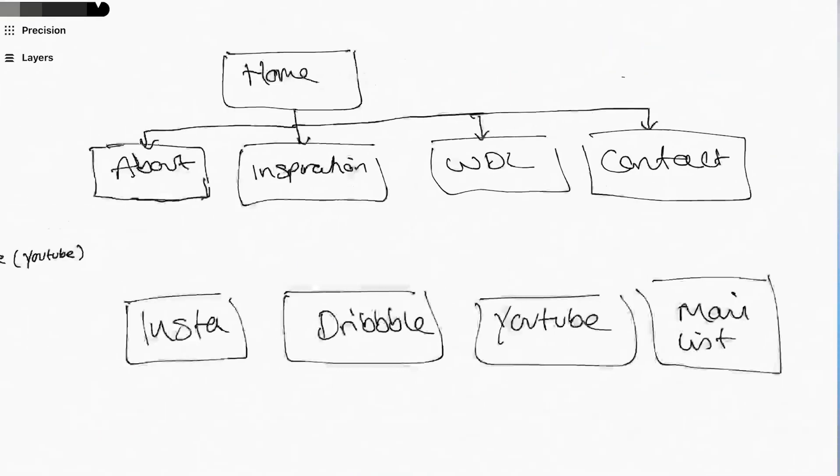In addition to the site structure, I want to add some social links — these are links that go off to social media platforms. I'm going to make a separate note of them because they don't really affect the structure of the site as such, but I want to keep track of them since they'll be linking off to other places. We've got Instagram, Dribbble, YouTube, and a mailing list.